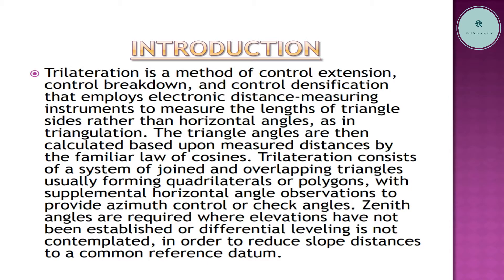Trilateration is a method of control extension, control breakdown, and control densification that employs electronic distance measuring instruments to measure the lengths of triangle sides, rather than horizontal angles as in triangulation. The triangle angles are then calculated based upon measured distances by the familiar law of cosines.